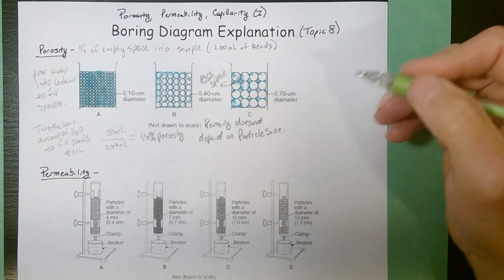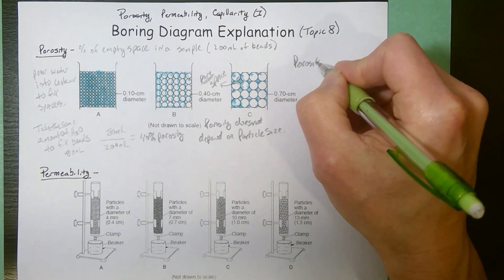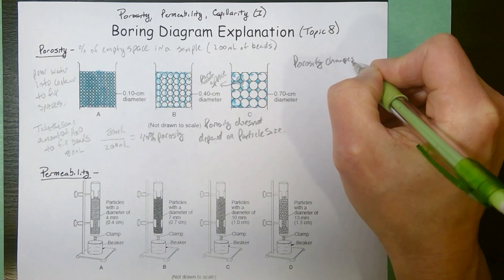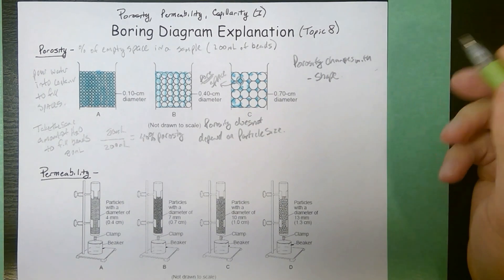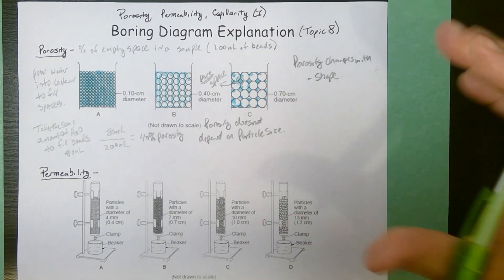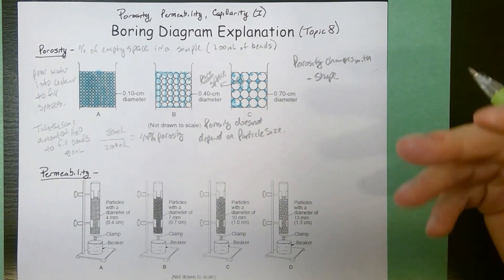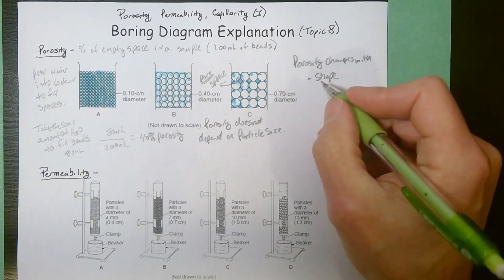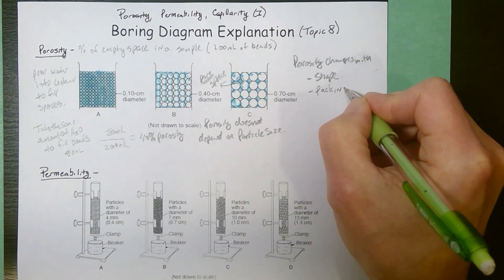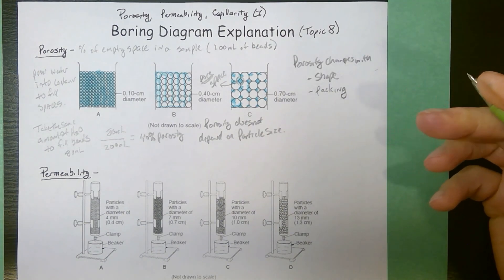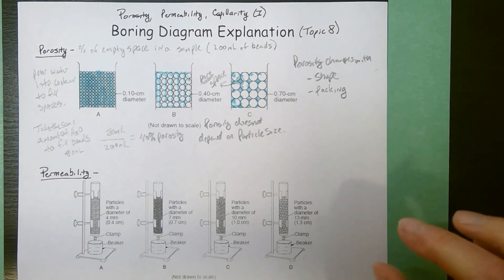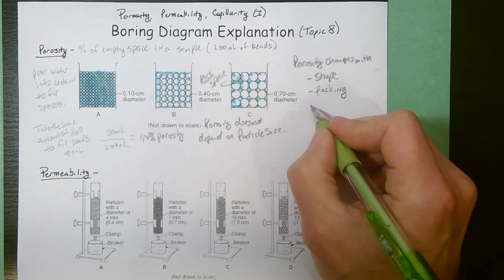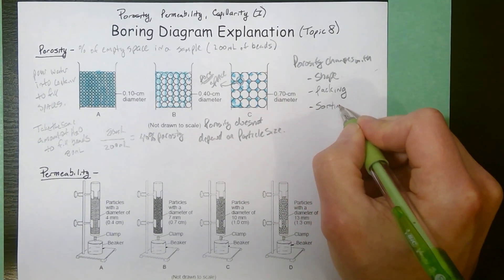Now if you want to change the porosity, porosity changes with shape. Round objects don't fit together very well. If you had more angular or jagged objects, they'd pack together better and you'd get less space between them. Packing. You can tightly pack or loosely pack material. When you more tightly pack a substance, you're going to squish out the spaces in between the particles. So tighter packing means lower porosity.